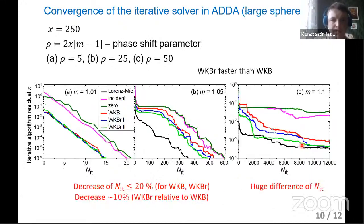We also conducted tests for large sphere. It's interesting that in this case, we have stagnation intervals and fast convergence intervals. Previously it was linear convergence. Here we can see that WKB with refraction works better than others. In this case, there is a huge difference in number of iterations between WKB-R and other approximations.